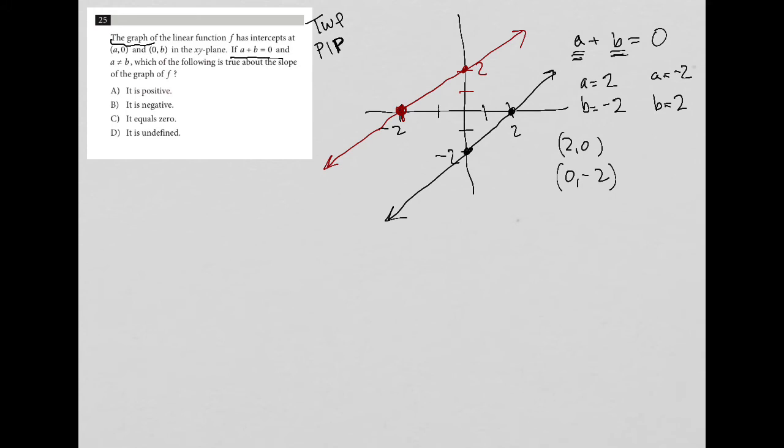So then it goes on to say a cannot equal b, which we already knew because a plus b equals 0. And then which of the following is true about the slope of the graph of f? Well, it looks like the slope, given what I have chosen, is going to be positive 1. So up 2, right 2. In both cases, it's positive 1. So it doesn't give me a value here, but a says it's positive, which goes along with what I thought. b says it's negative. Well, I don't think so because I gave two different options for a and b that would make this statement true. And in both cases, slope was positive.